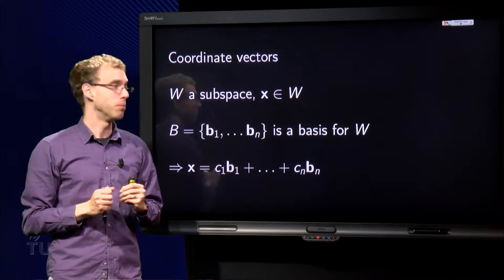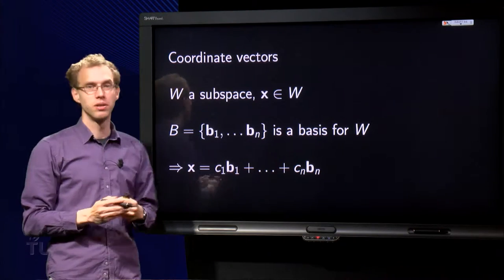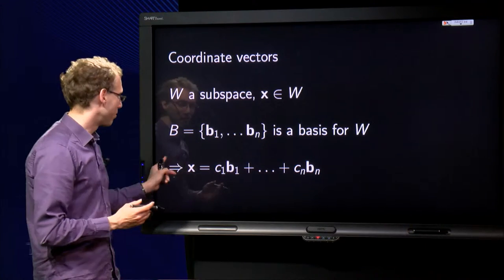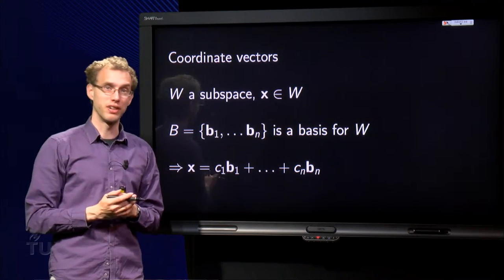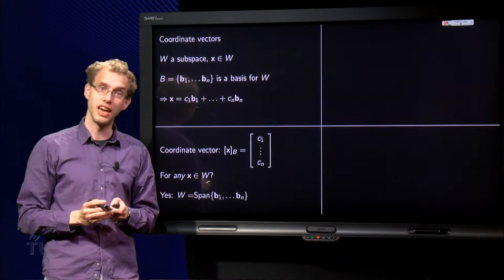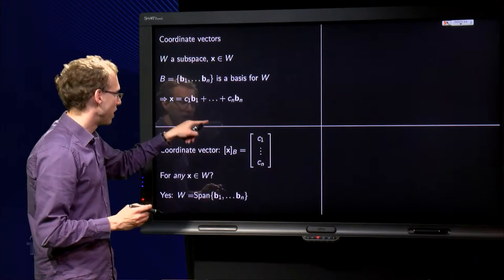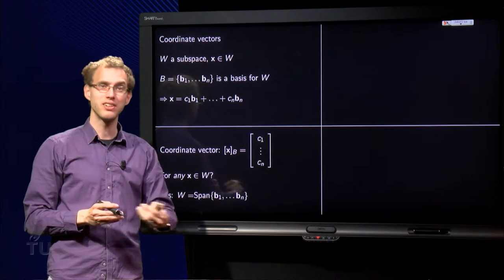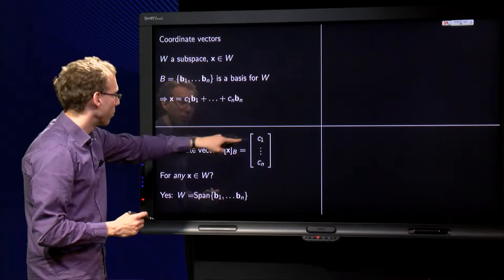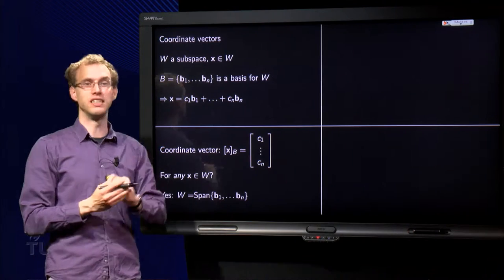Suppose we have a subspace W and a vector x in the subspace W, and the basis b₁ up to bₙ, a basis for W. Then we know that we can express the vector x in terms of b₁ up to bₙ with weights c₁ up to cₙ. Now, we call those weights c₁ up to cₙ - we can put those weights in a new vector. Of course they are just numbers, so we can put them in a vector. And we call this new vector the coordinate vector of x with respect to the basis B.